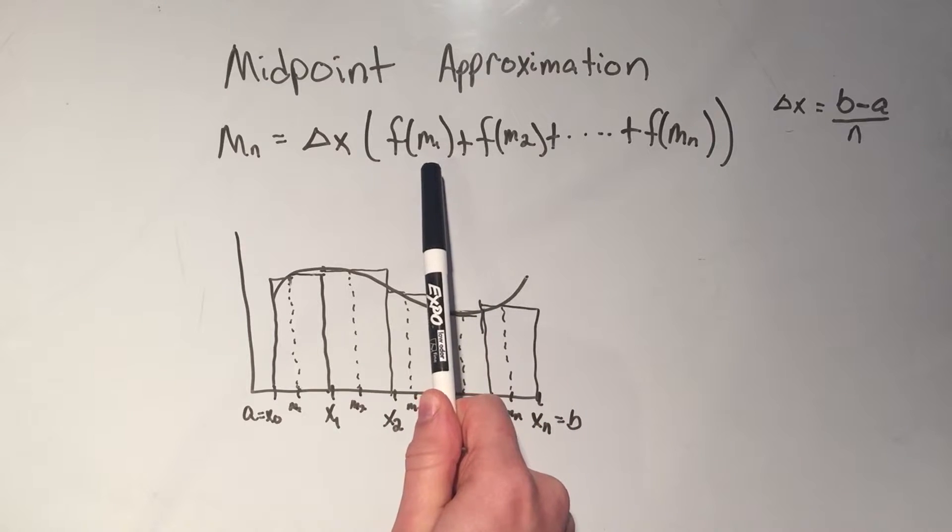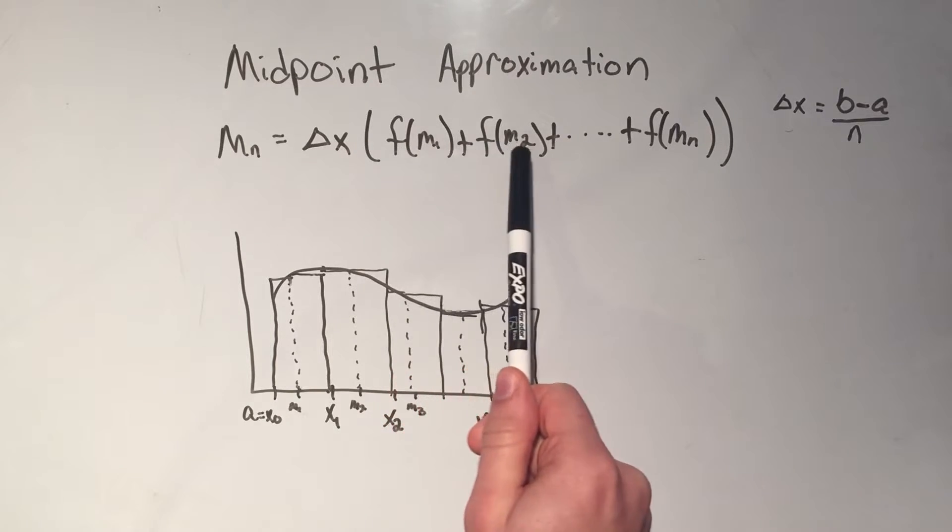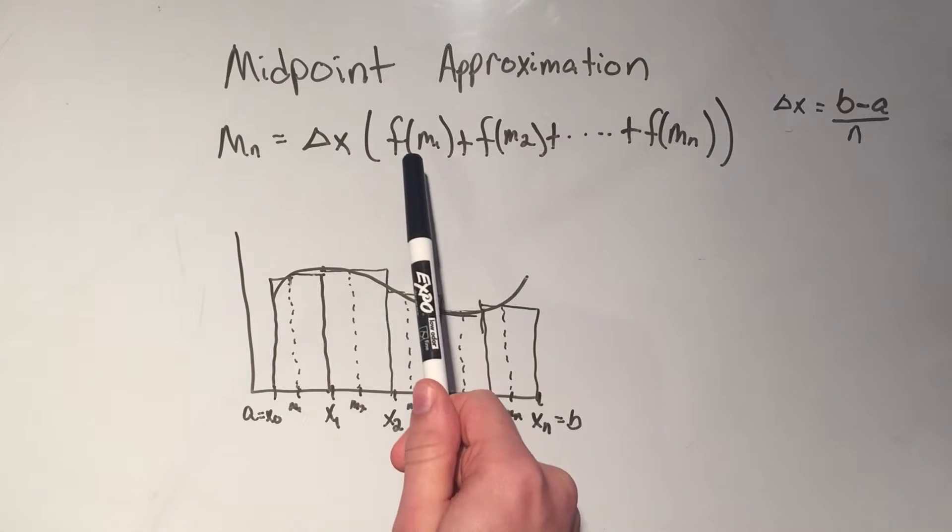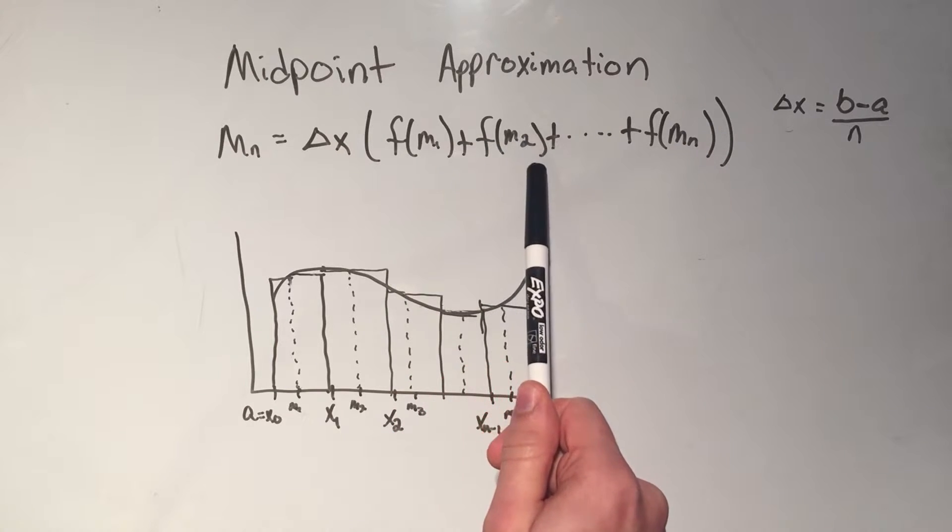Delta x times this whole quantity, which is the sum of your function evaluated at the different midpoints. So f of m1, f of m2,